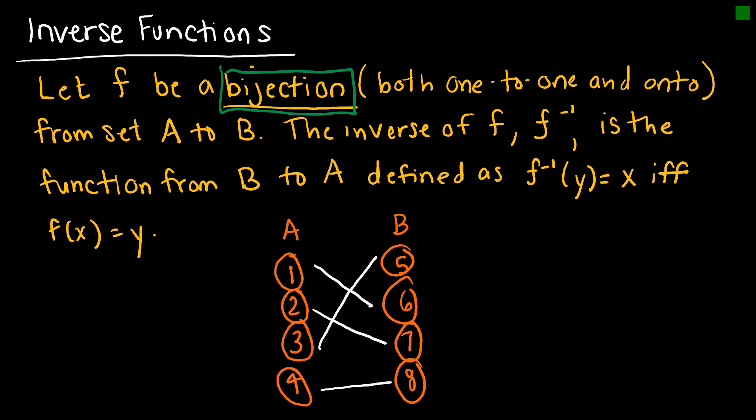Looking at my example down here, this is onto because there are no elements of B that haven't been mapped to from set A. It is one-to-one because each of these elements is only mapped to one time. So it has to be a bijection.